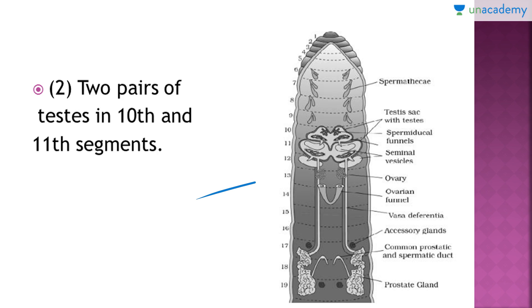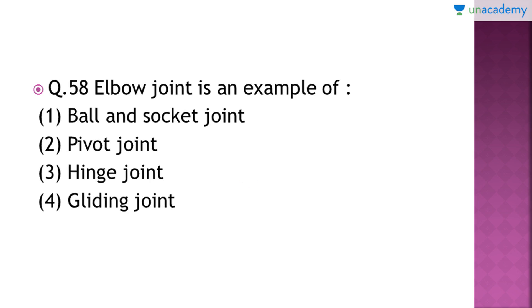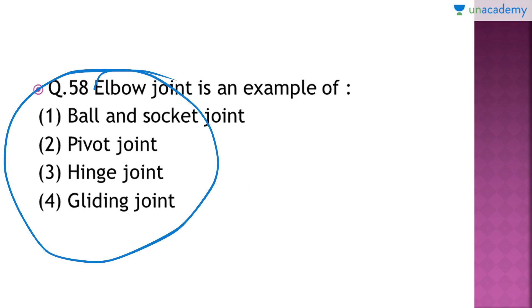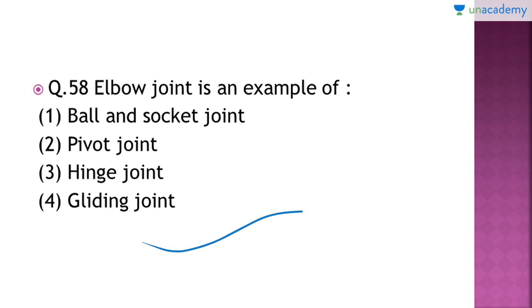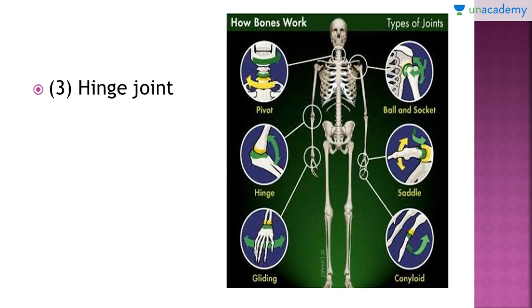Question number 58: Elbow joint is an example of which type of joint? The right answer is option number three — elbow joint is a type of hinge joint. In a hinge joint the part can be moved in one plane only, like the forearm and arm which can move in one plane only and not in any other plane.